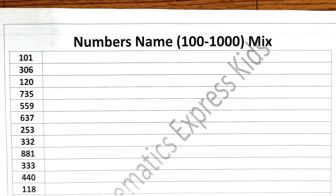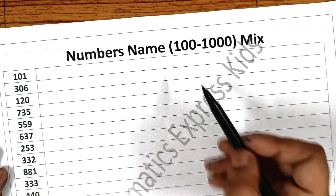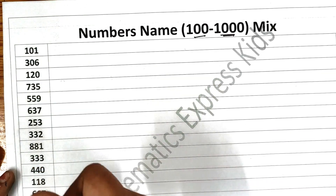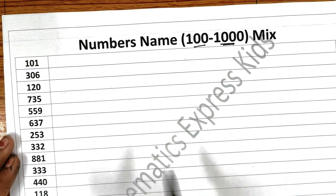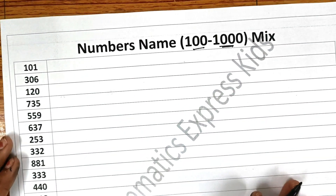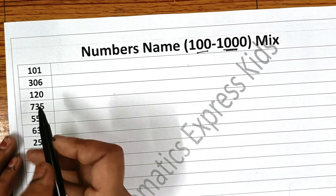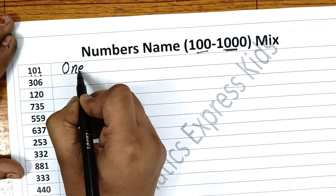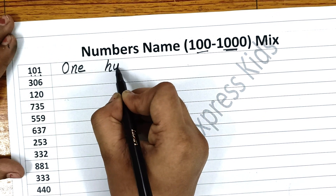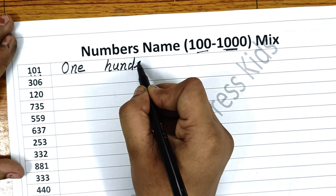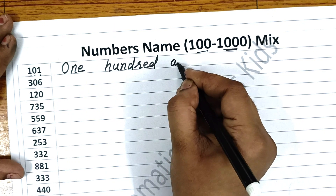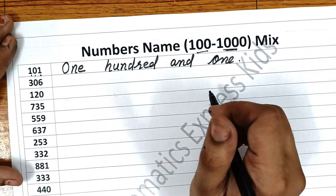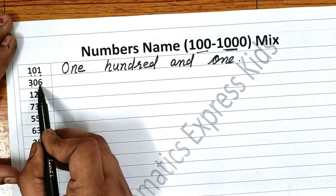Hello everyone, welcome to my class. I am here with my new topic: number names from 100 to 1000. This is a mixed one — I have taken all kinds of numbers. Now we have to write these words. The first one is 101. So, 100 — H-U-N-D-R-E-D — and one. 101.